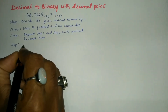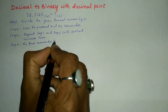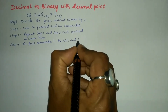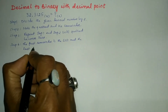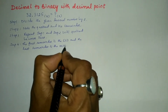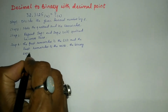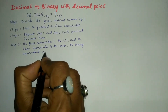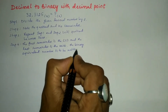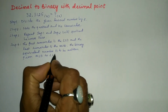Step 4: the first remainder is the least significant digit and the last remainder is the most significant digit. The binary equivalent number is to be written from most significant digit to least significant digit.